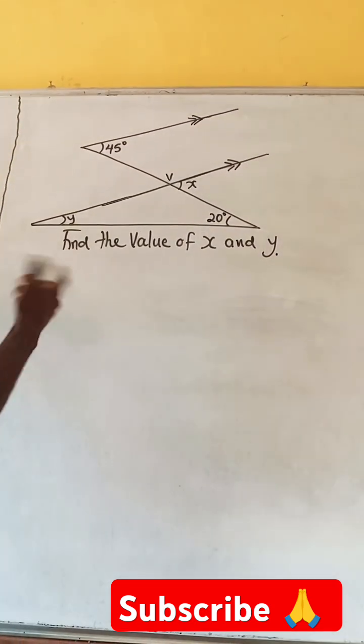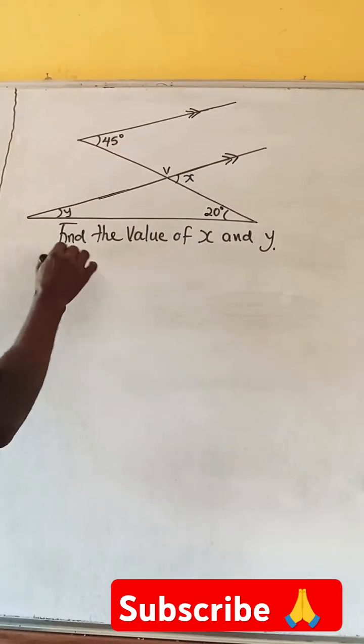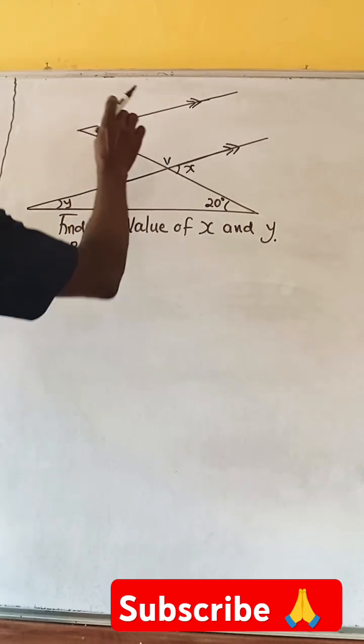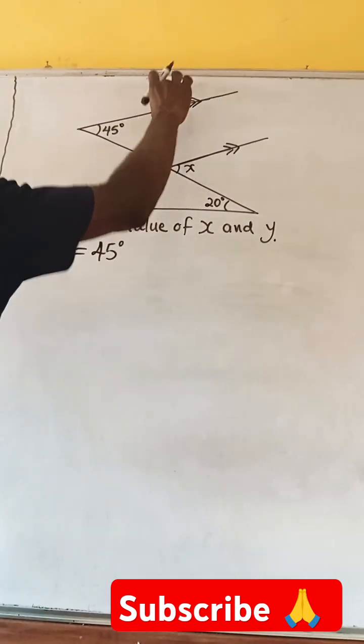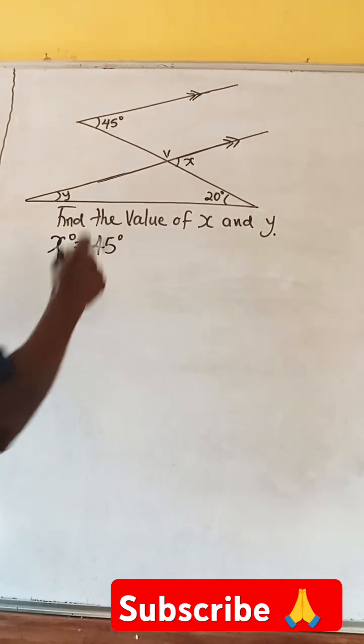So quickly, without wasting much time, let's quickly look for the value of X. X equals 45 degrees here. Why? Because these are two parallel lines, and we have a transversal that crosses through them.